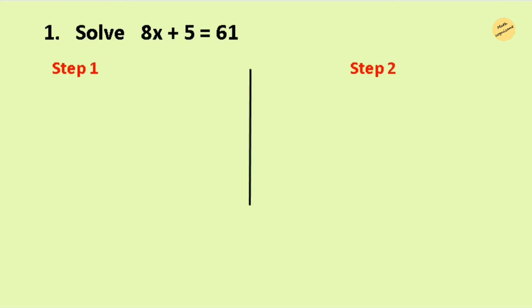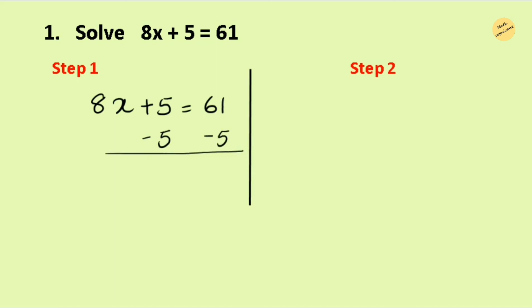Let's start with the first question. You can see there is a multiplication as well as an addition sign. Since it's an addition equation, we need to do the inverse operation, which is subtraction. Writing the equation as it is, we subtract 5 from both sides of the equal sign — minus 5 and minus 5 — which cancel, leaving X equals 61 minus 5, which is 56.